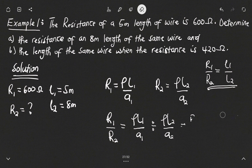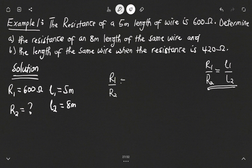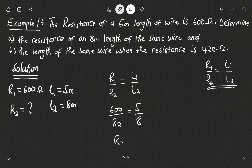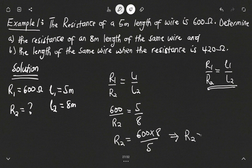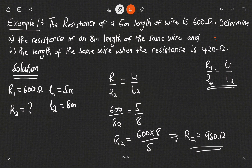So we have R1 on R2 is equal to L1 on L2. R1 is 600, R2 is unknown, L1 is 5 meters, and L2 is 8 meters. So R2 will be equal to 600 multiplied by 8 divided by 5, and when we compute this our second resistance gives us a value of 960 ohms.